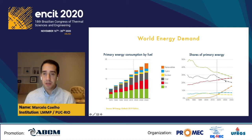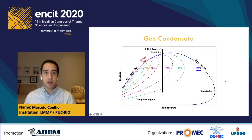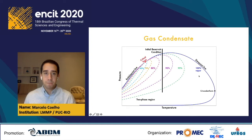We are finding reservoirs with higher pressure and higher temperature, so in some cases we can find a reservoir with a gas condensate. I'm going to explain the conditions needed to have a gas condensate reservoir. First, we need a temperature that is between the critical point temperature and the cricondentherm temperature, so we are in this middle region here.